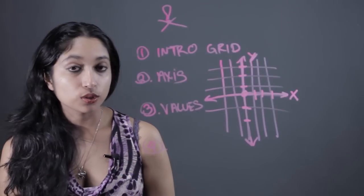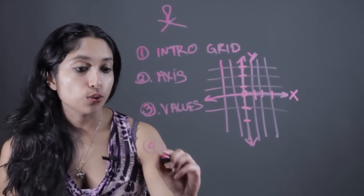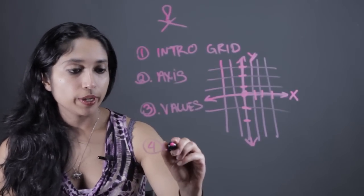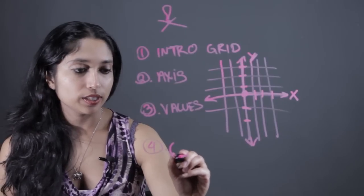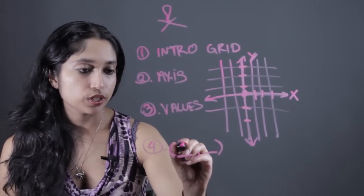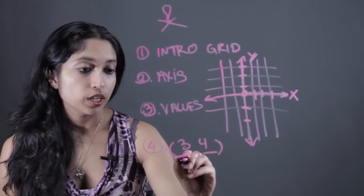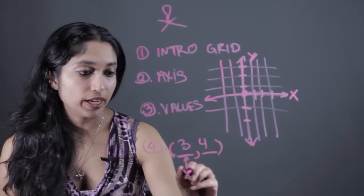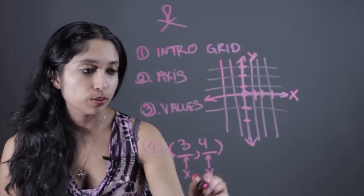The fourth thing you're going to want to do is start to introduce ordered pairs. An ordered pair is written like some number comma another number. For example, three comma four. This first value right here is going to be the x, the second one is going to be the y.